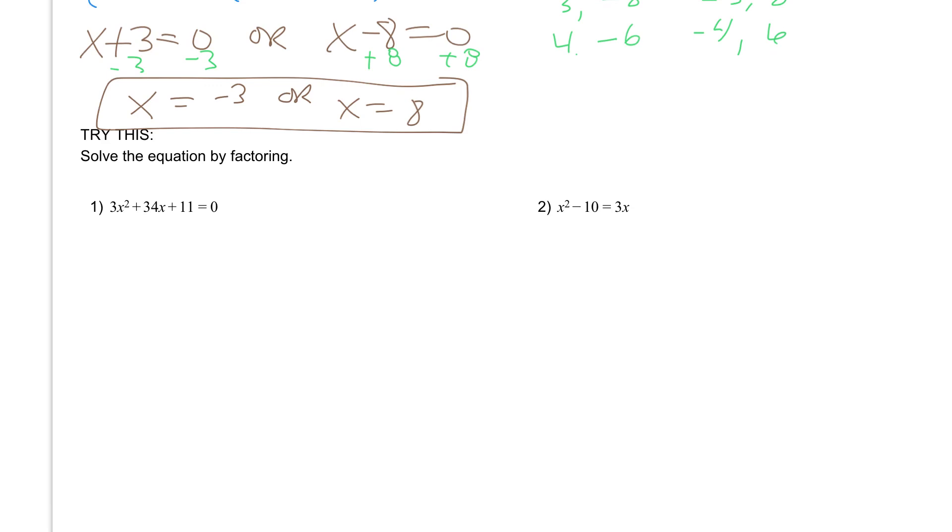If you did number 1 correctly, you should have factored it into (3x + 1)(x + 11) and have that set equal to 0. Then when you solved it, you should have gotten x to equal -1/3 or x to equal -11.